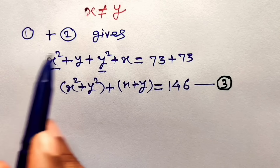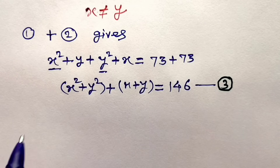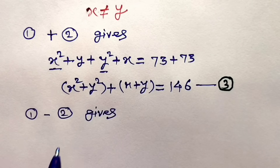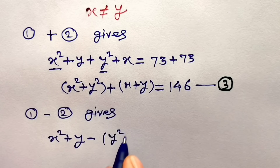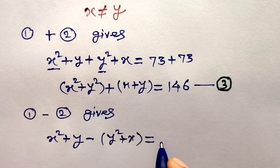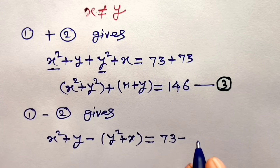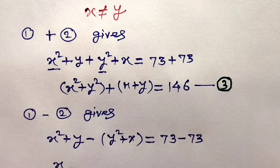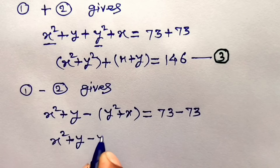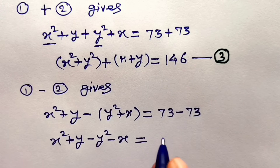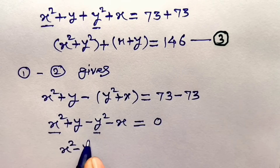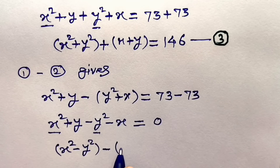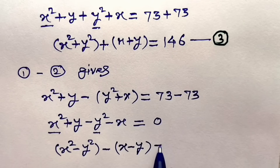Now let us take the subtraction of equation 1 and equation 2 — that is, subtracting equation 2 from equation 1. Equation 1 minus 2 gives: x squared plus y, minus y squared plus x, is equal to 73 minus 73. Simplifying the left hand side: x squared plus y minus y squared minus x is equal to 0. Collecting square terms in one bracket, we get x squared minus y squared, and taking minus sign common from the remaining terms, minus of x minus y, is equal to 0.